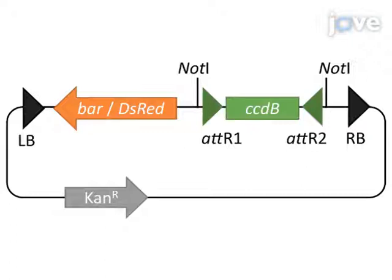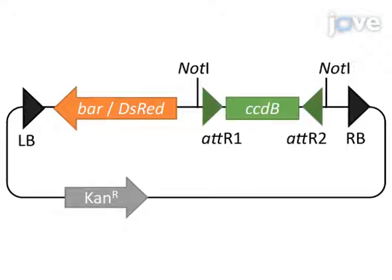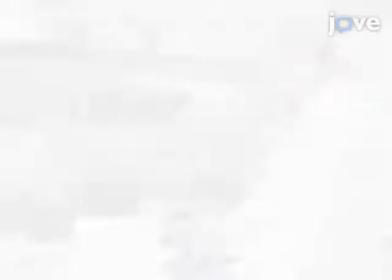There are two buyback GW plasmids available. The buyback RFP GW plasmid contains a DS-RED gene that is expressed in seed coats. The buyback BAR GW plasmid contains a gene providing resistance to glufosinate. Both vectors contain a kanamycin-resistant gene as a selection marker in bacteria.